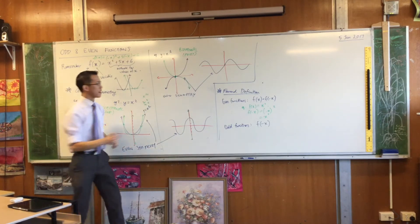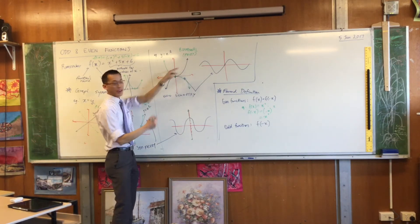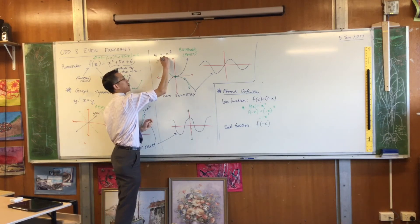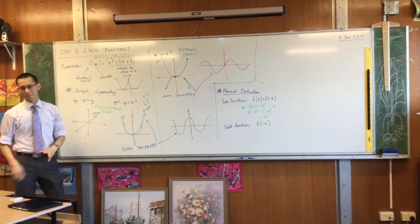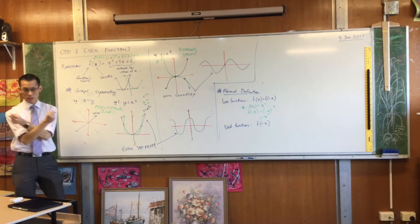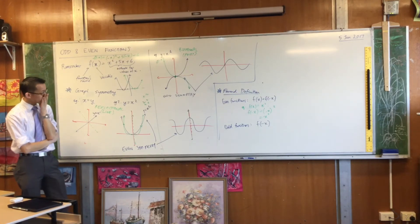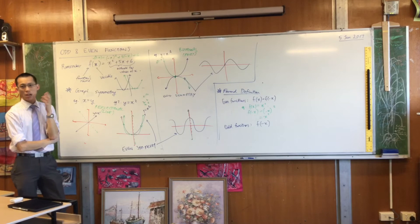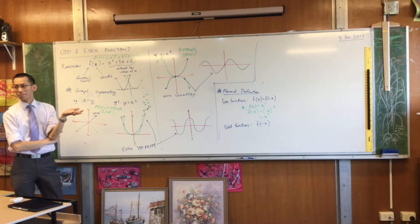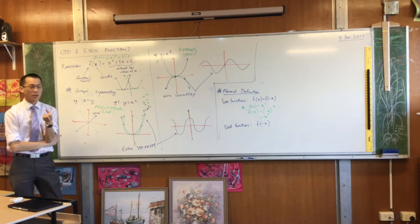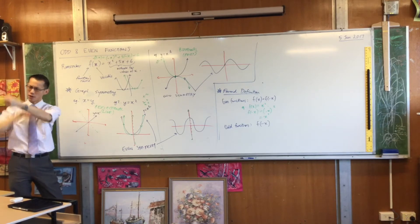So if the original one was f of x, here is f of negative x. We flipped it horizontally.